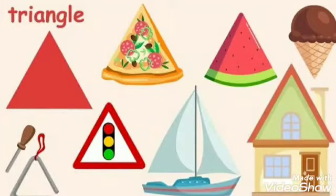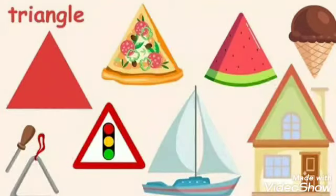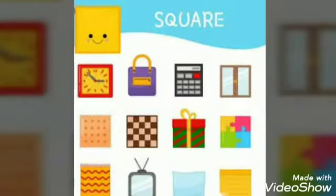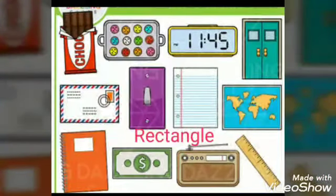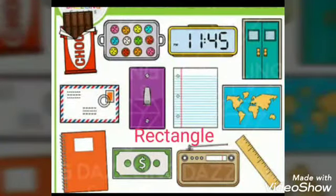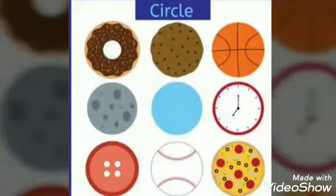Look here children. This is a picture of a triangle. There are three sides and three corners in a triangle. This is a square. There are four corners and four sides in a square. This is a rectangle. There are four sides and four corners in a rectangle. This is a circle. There is no corner and no sides in a circle.